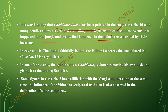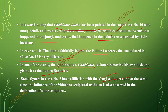In Cave number 10, the Jataka faithfully follows the Pali text, whereas the one painted in Cave number 17 is very difficult to understand. In one of the events, the Bodhisattva Chantata is shown removing his own tusk and giving it to a hunter. The figures in Cave number 2 have affiliation with Vengi sculptures — that is, sculptures found in southern India around Andhra Pradesh — and at the same time the influence of Vidarbha sculptural tradition is also observed in the delineation of the sculptures.